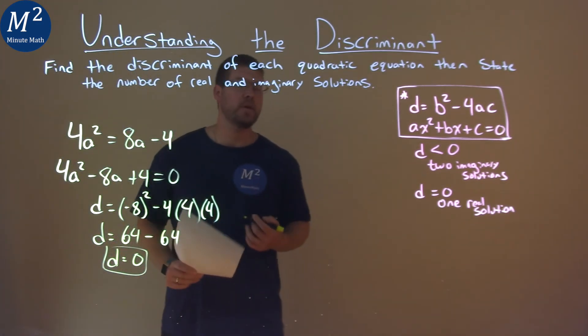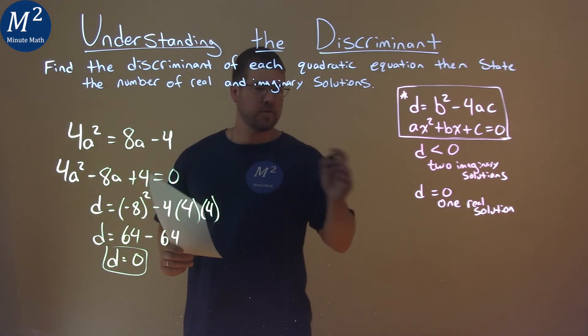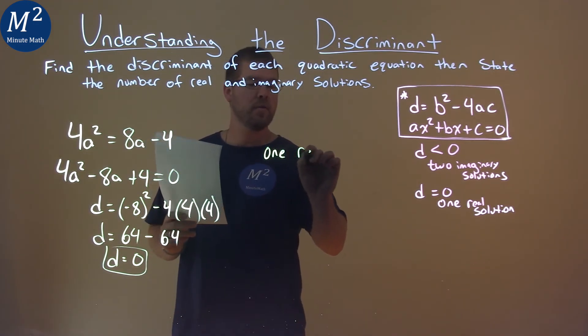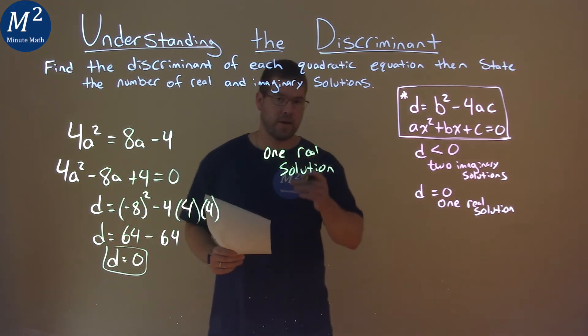So our discriminant here is equal to zero, and what does that tell us? Well, that tells us that we have one real solution, and that is our final answer.